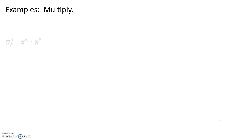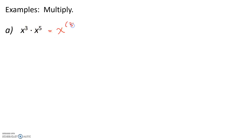Examples. Multiply x cubed times x to the 5th. When multiplying the same base, we add the powers and keep the base. So, this will be x to the 3 plus 5, which is x to the 8th.